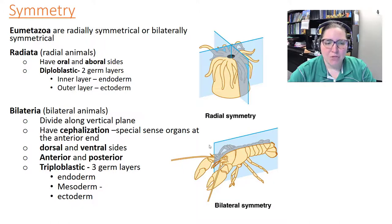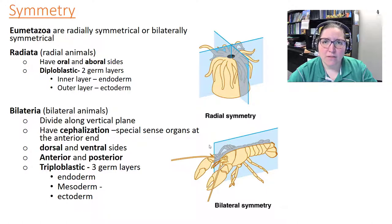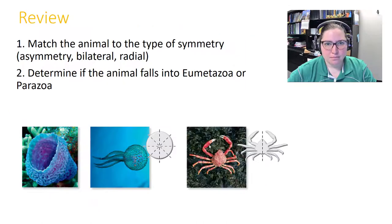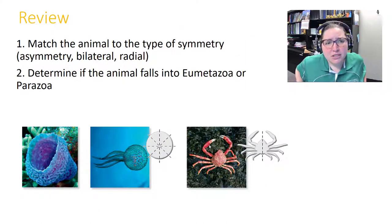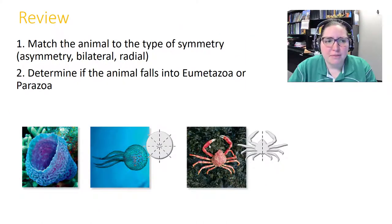Bilateral organisms are triploblastic, meaning they have three germ layers: the endoderm (inside), the ectoderm (outside), and the mesoderm in between — the middle layer.